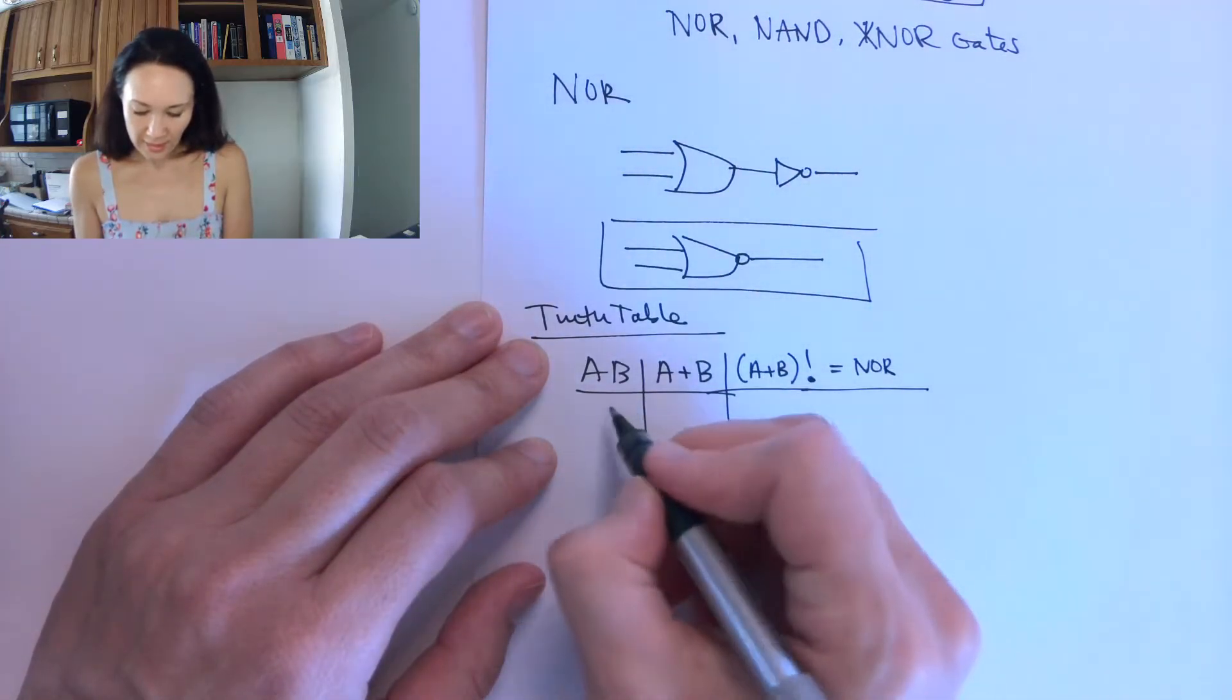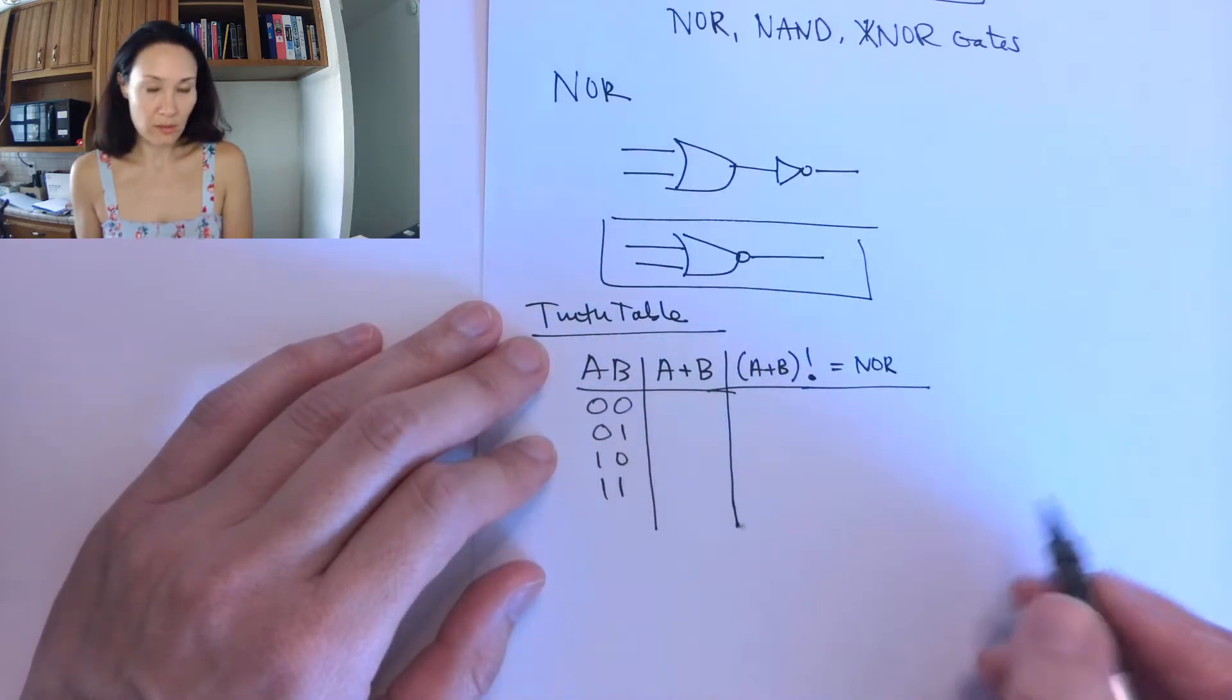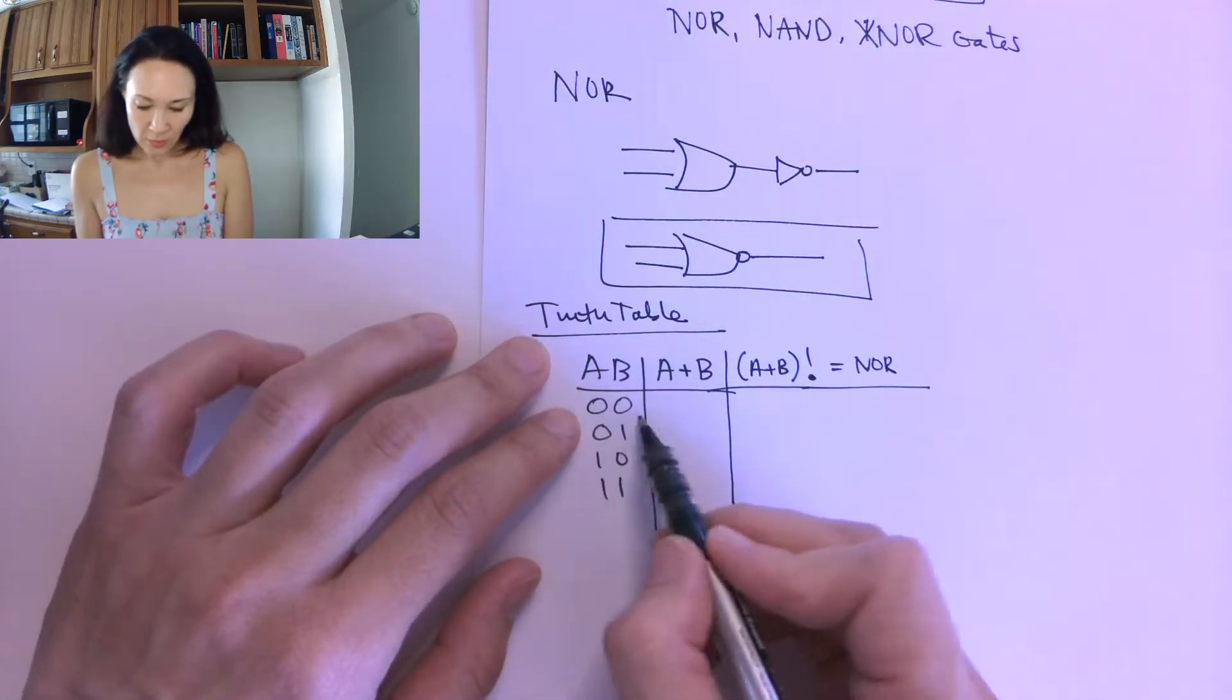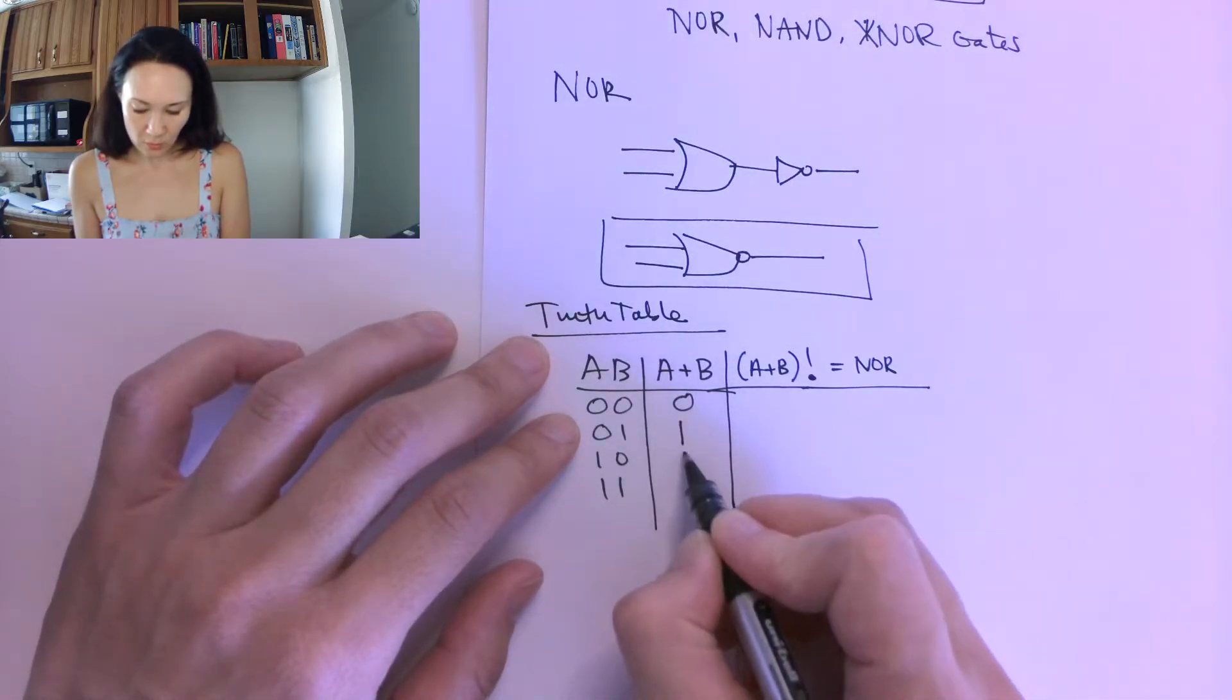Let's go through these cases: 0, 0, 0, 1, 1, 0, 1, 1. A or B: 0 or 0 would be 0. Remember the truth table for ORing, this is 1, 1, 1.